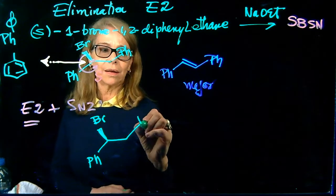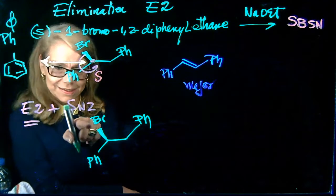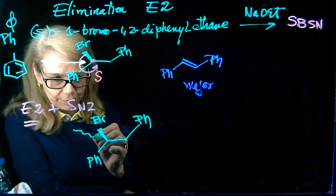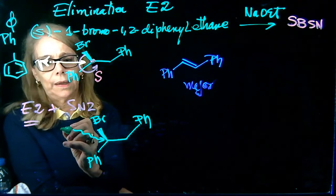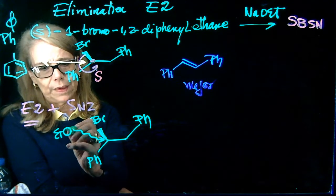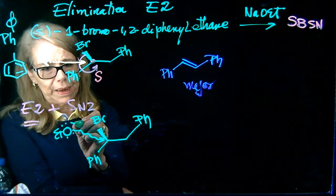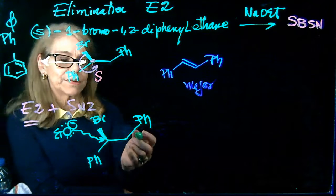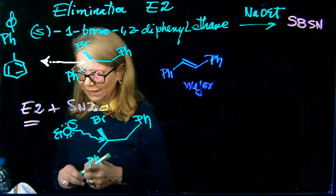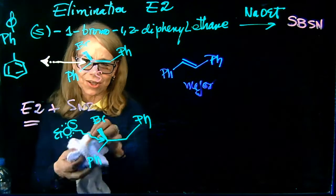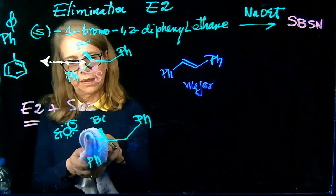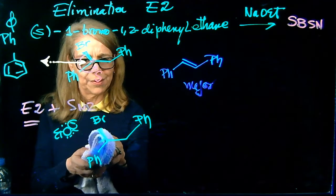So, the nucleophile is going to come from the backside. This is me, so it's going to come over here. Ethoxide, because it's coming from the back. And this is a concerted mechanism, as we know. I'm going to replace it by another arrow, the proper arrow for mechanism.